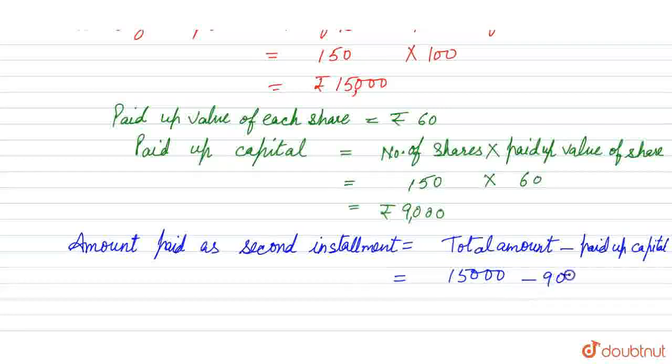So 15,000 minus 9,000 is equal to, that is equal to, if we subtract 15 minus 9, then what will we get? 6,000 rupees will come as the second installment.